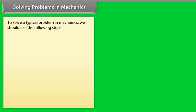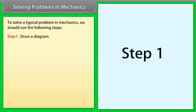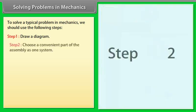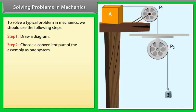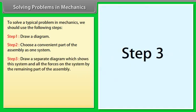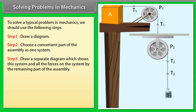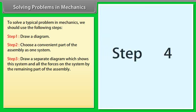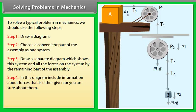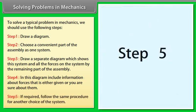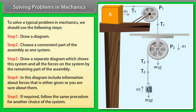Solving Problems in Mechanics: To solve a typical problem in mechanics, use the following steps. Step 1: Draw a diagram. Step 2: Choose a convenient part of the assembly as one system. Step 3: Draw a separate diagram showing this system and all the forces on it. Step 4: Include information about forces that is given or that you are sure about. Step 5: If required, follow the same procedure for another choice of system.